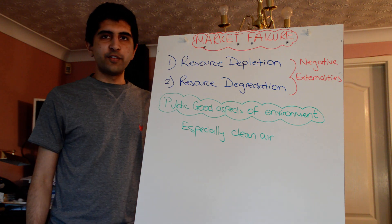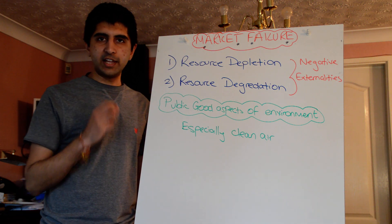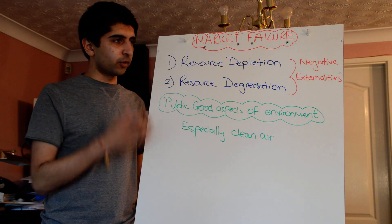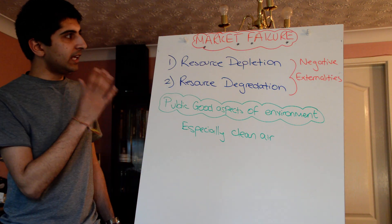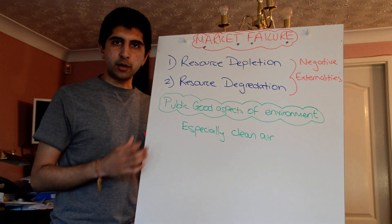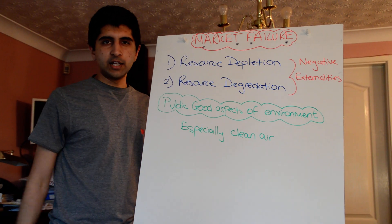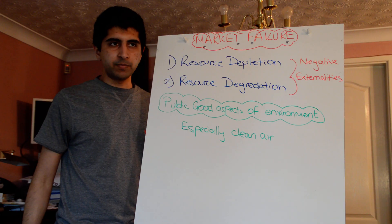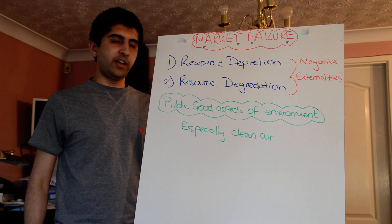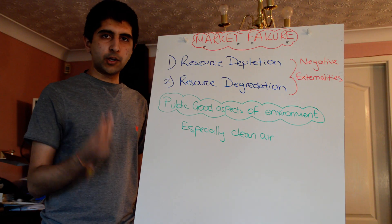Hi everyone. A lot of you have asked me to do some videos about market failure and how it differs from AS level and what's required at A2. The key difference between A2 and AS market failure is the notion of environmental market failure, a specific type of market failure. Within environmental market failure, there are three main things you need to know that cause it.